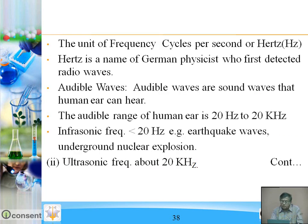The unit of frequency is cycles per second or hertz. Hertz is the name of the German physicist who first detected radio waves. Audible waves are sound waves that the human ear can hear. The audible range of the human ear is 20 Hz to 20 kHz. Infrasonic frequency is less than 20 Hz — examples include earthquake waves and underground nuclear explosions. Ultrasonic frequency is above 20 kHz.